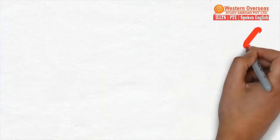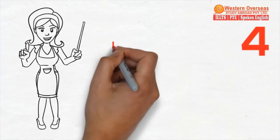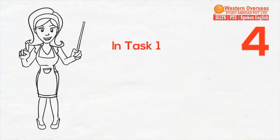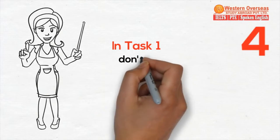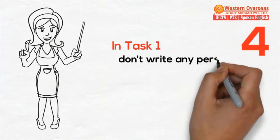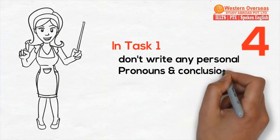Tip number four: in Task 1, don't write any personal pronoun or conclusion based on the chart, graph, or diagram.